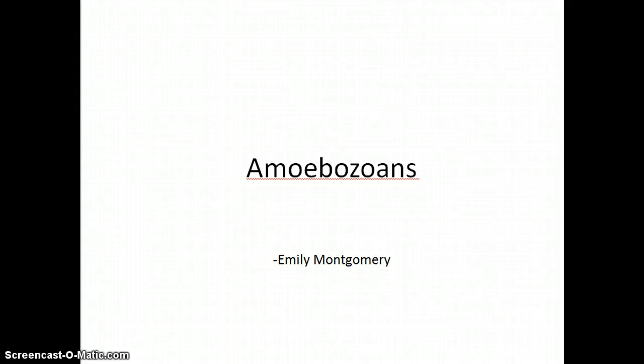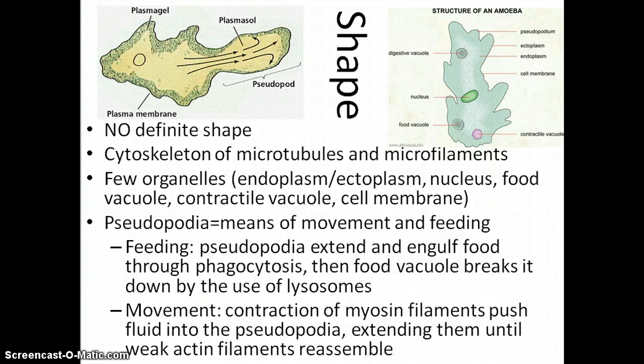Amoeba Zones by Emily Montgomery. Amoebas have no definite shape and can often be referred to as a simple blob. They have a cytoskeleton of microtubules and microfilaments, which help in the process of movement, which I'll talk about in a minute.